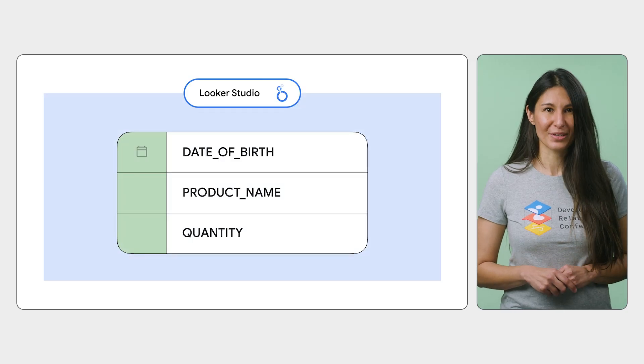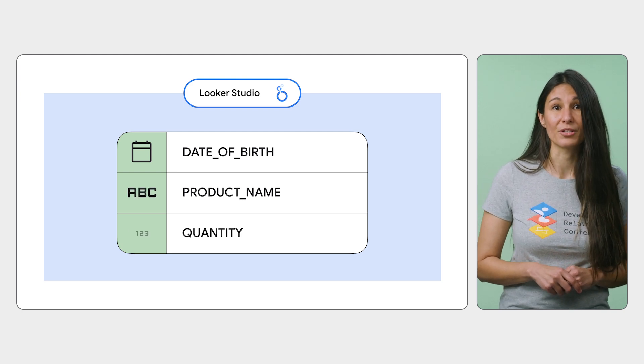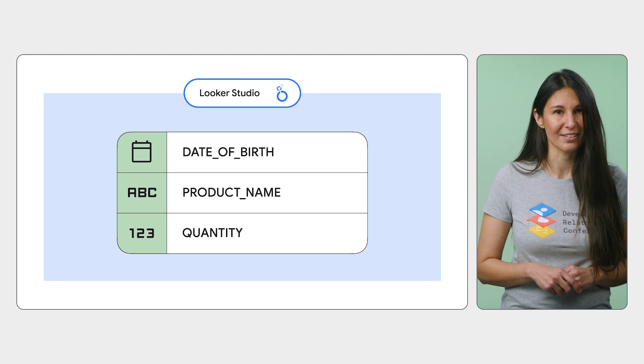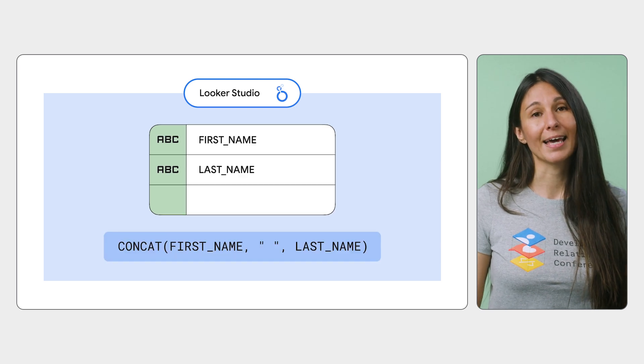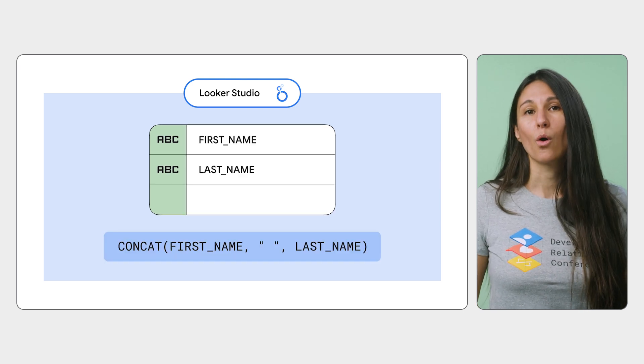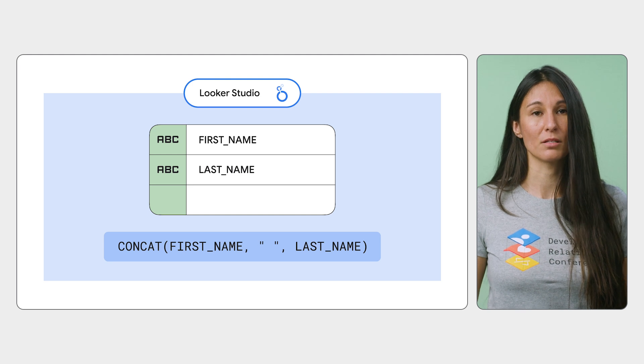Once you've connected your data, you have a data source in Looker Studio. This data source lets you model your data without changing the original dataset. To model the data, you can indicate the data types of your fields, and you can create new fields to bin and group your data, or create calculated fields. Calculated fields use functions like CONCAT, DATEDIFF, or CASE statements to create new metrics or dimensions on the fly.